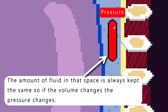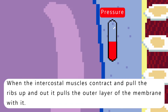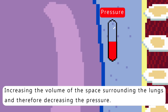The amount of fluid in that space is always kept the same, so if the volume changes, the pressure changes. When the intercostal muscles contract and pull the ribs up and out, it pulls the outer layer of the membrane with it, increasing the volume of the space surrounding the lungs and therefore decreasing the pressure.